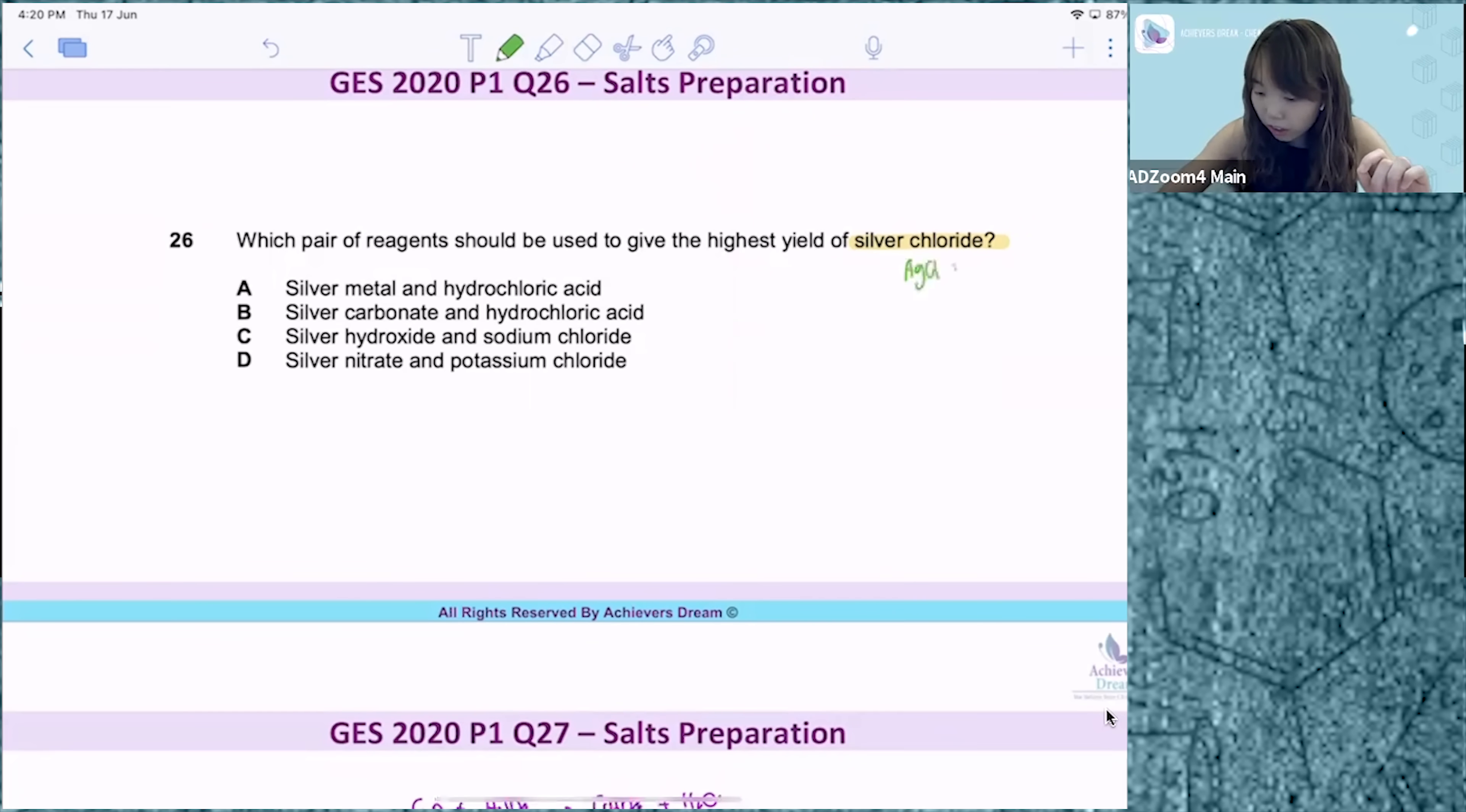Silver chloride, if you check the solubility table, this is an insoluble salt. To prepare insoluble salts, we use the precipitation method.